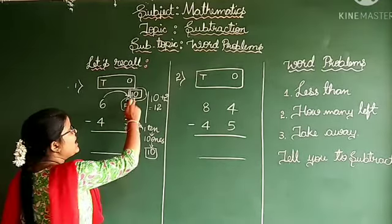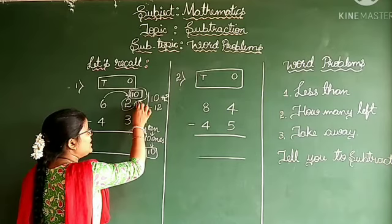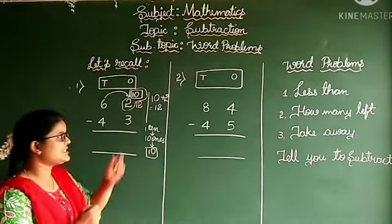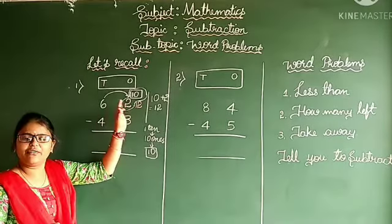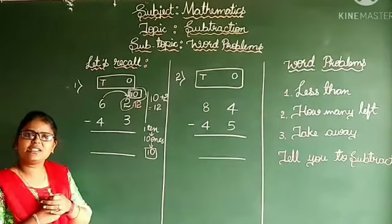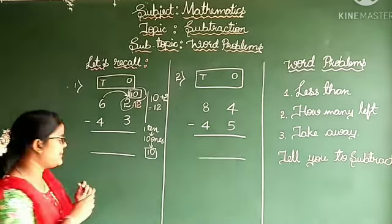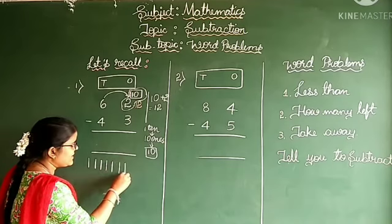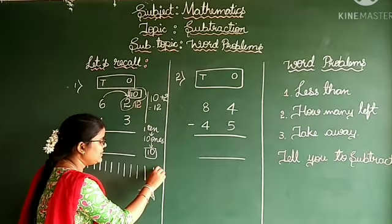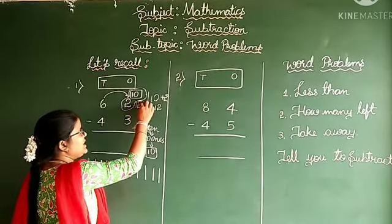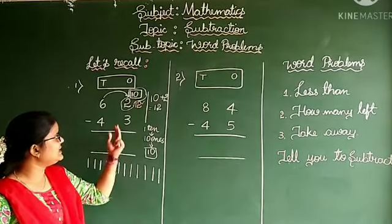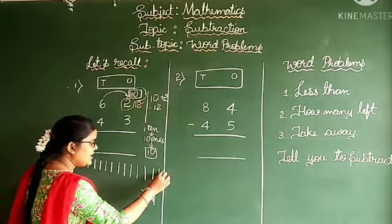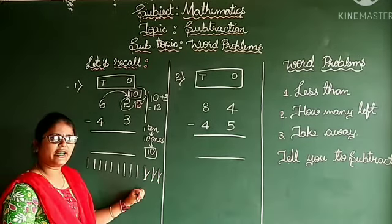Instead of the 10 and 2, you write down 12. Then subtract: 12 minus 3. Keep 12 lines, strike out 3 lines — 1, 2, 3. We have struck out 3 lines.